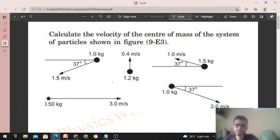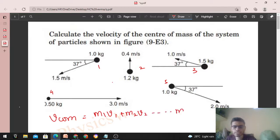It says calculate the velocity of the center of mass of the system of particles shown in figure 9-E3. So see, the velocity of the center of mass will be m1v1 plus m2v2 up to m5v5 divided by m1 plus m2 plus m3 up to m5, right? What is v1? v1 is the velocity of m1, v2 is the velocity of m2, and so on.